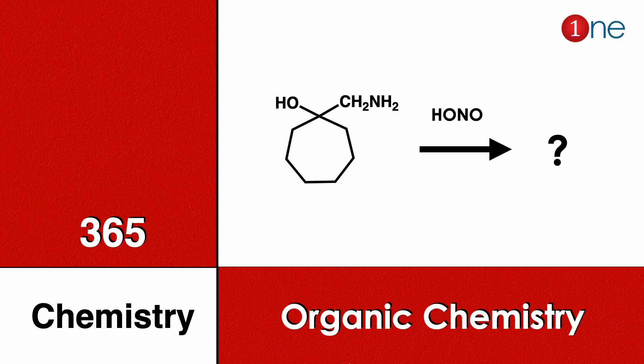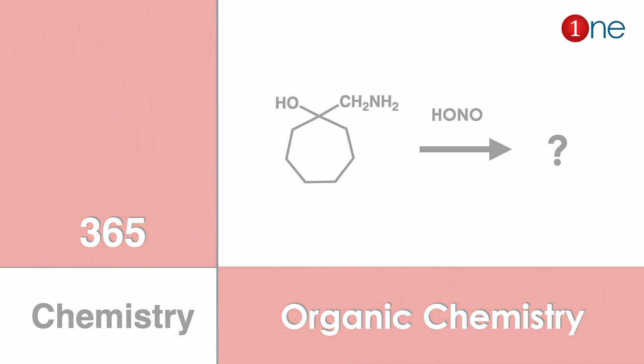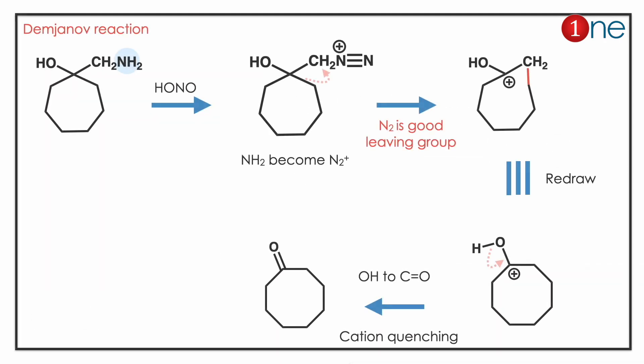Welcome to One Chemistry. This is the 365 Chemistry Series — organic chemistry questions for you. Here you have a six-membered ring attached with an alcohol and methylamine. You are using nitrous acid. We need to find what the final product will be.